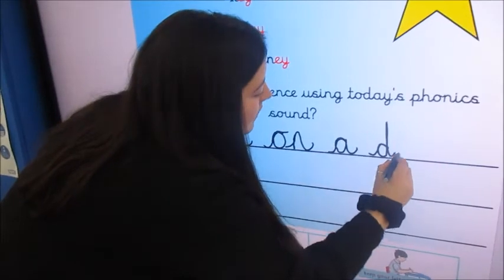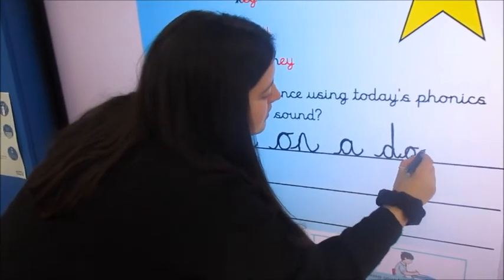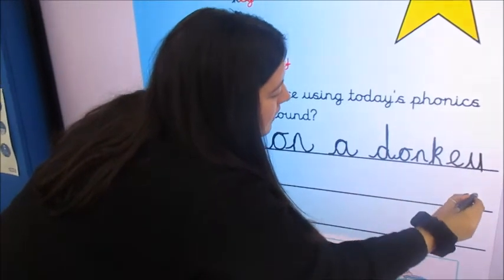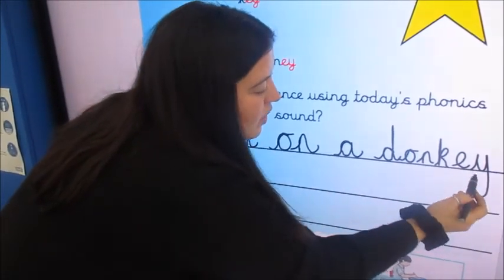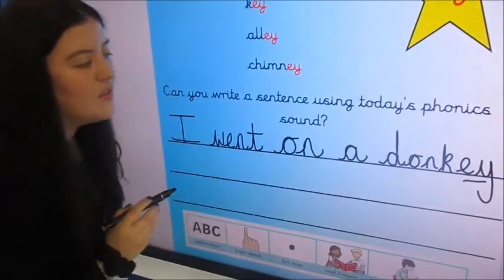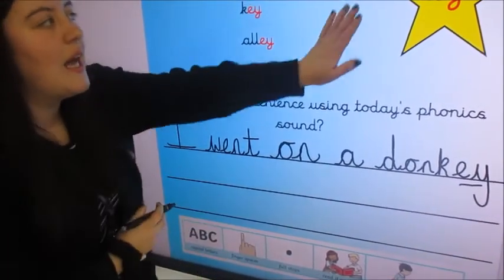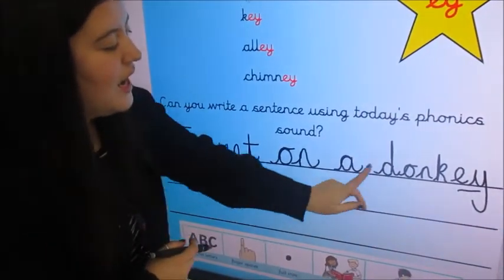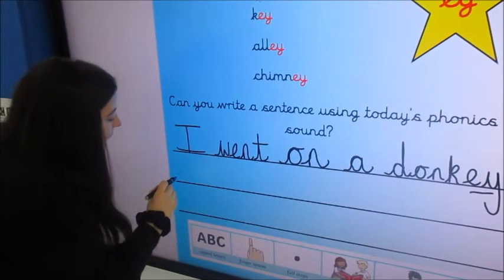D-O-N-K-E-Y. Donkey. Look how I've used my spelling of the E sound, thinking carefully about the spelling word. I went on a donkey. I went on a donkey.